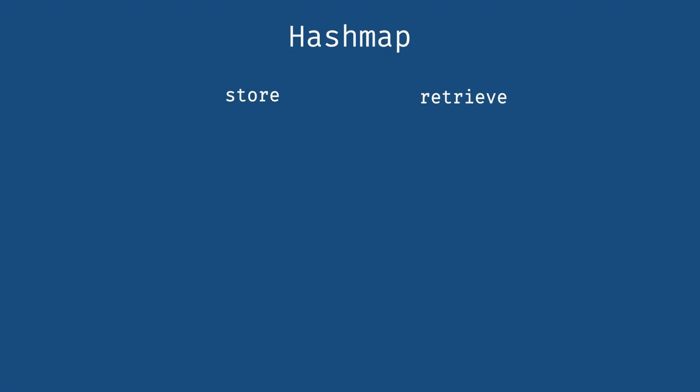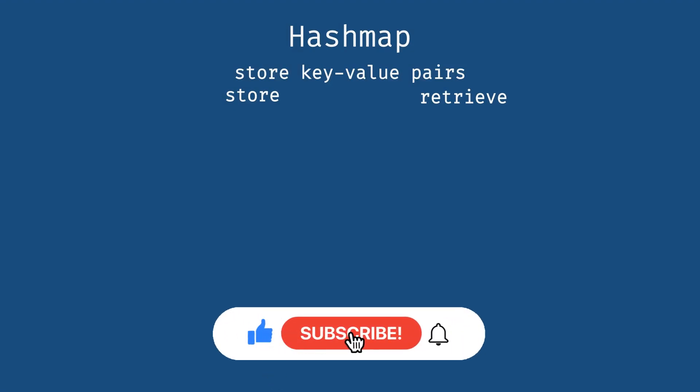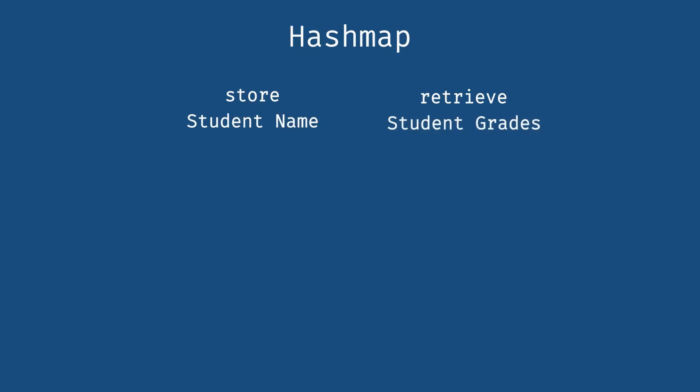A hash map is part of Java's collections framework and provides a way to store key-value pairs. For example, you can use a hash map to store student names to student grades. We have John had an A, Paul had a B, Ringo had a C. So this data structure would allow us to associate these grades to these names and also make it easy to look up the student grades by their names.